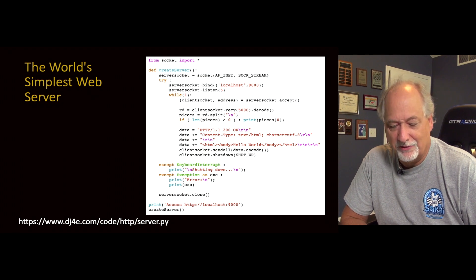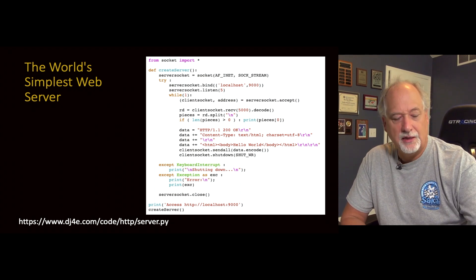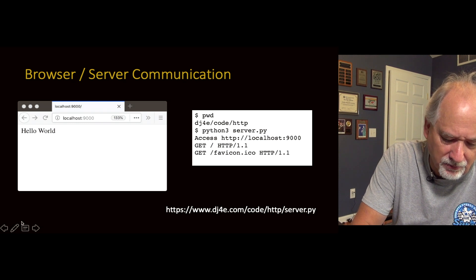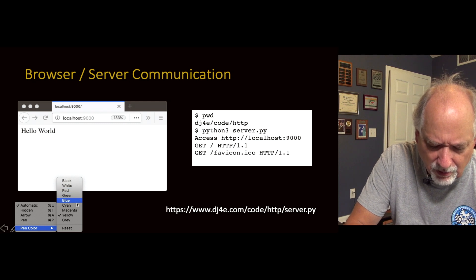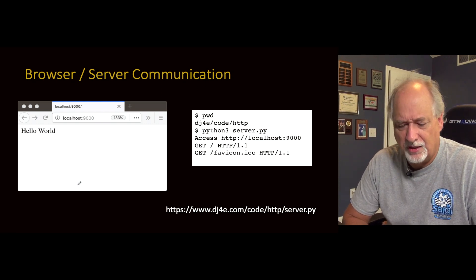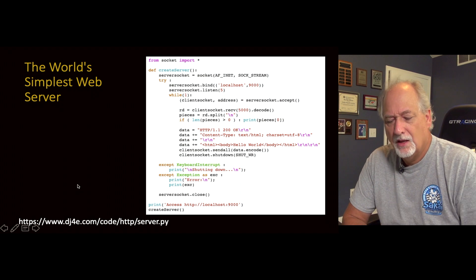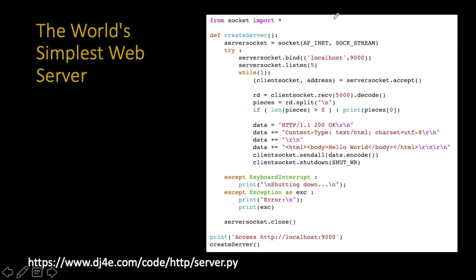Here is a very, very simple web server. It's a few more lines than the simplest web browser, because we have to put a little bit of error checking in with some try/except blocks. Let's walk through what this code does. We're going to pull in some more stuff from the socket library, and we're going to make a function called create_server that we call right here.